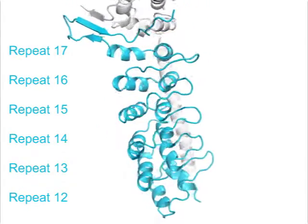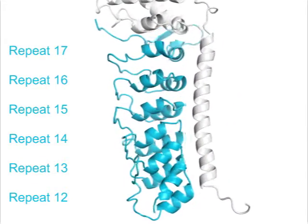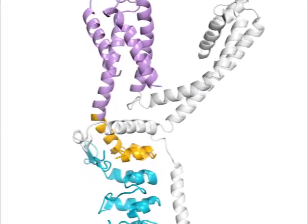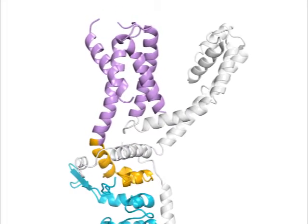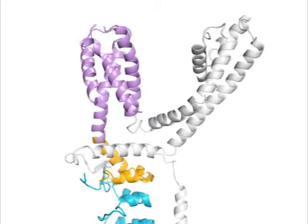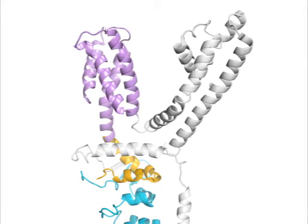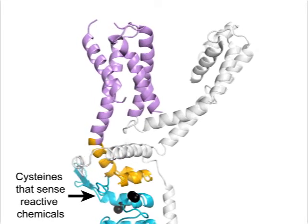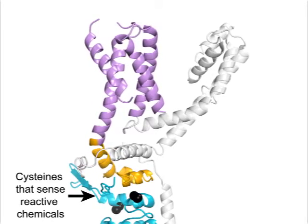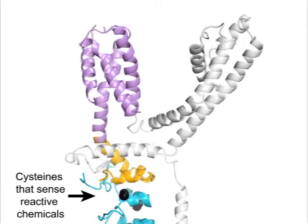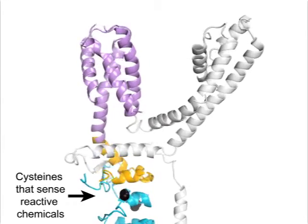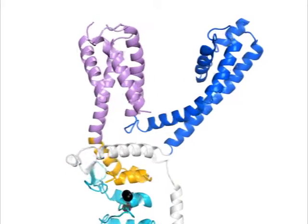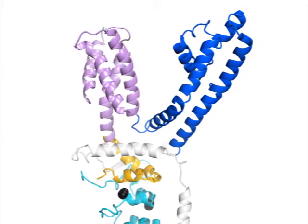Repeats 12 through 17 stack together with a helical twist. Note that repeat 17 has an extended loop, which forms a small beta sheet with a C-terminal fragment. Next comes the linker, in yellow, connecting to the first transmembrane domain, the S1-S4 bundle, in lilac. Cysteines important for TRPA1 activation by reactive chemicals are found in ankyrin repeat 17 and this linker. The S5 and S6 helices, shown here in blue, surround the pore.